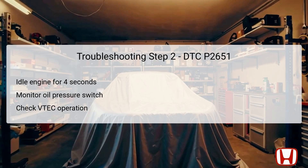After idling the engine for at least 4 seconds, observe the readings from the rocker arm oil pressure switch. This duration allows the system to stabilize and ensures that you're monitoring genuine readings. During this step, it's crucial to check that the VTEC system is responding properly as it transitions between operating modes, assisting in detecting if the rocker arm oil pressure is adequately managed. If the oil pressure switch continues to show unexpected values or remains inactive, further investigation into the control solenoids may be warranted. This idle observation is critical for diagnosing potential faults in the VCM system.